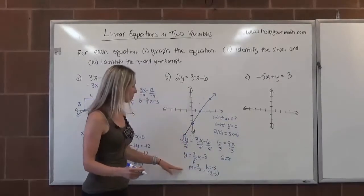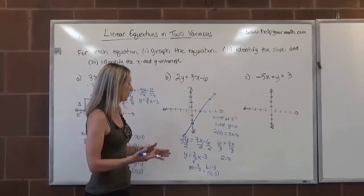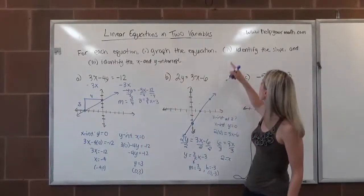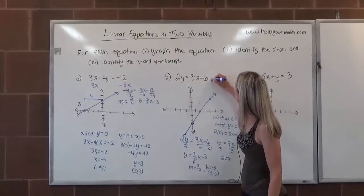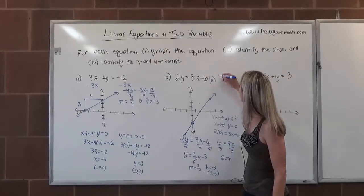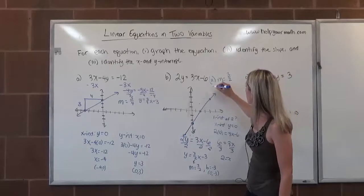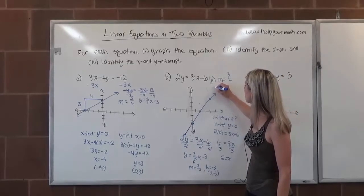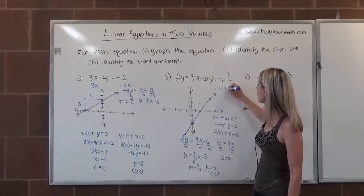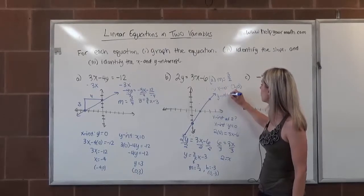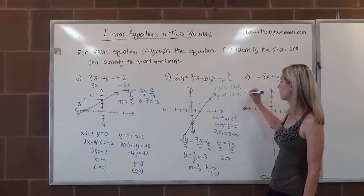So we have all three pieces of information. We might want to write them nice and neat so that way they're all in one place. Because right now I'm kind of all over the place. So it says identify the slope. So I'm going to say m is equal to 3 over 2. And then for 3 it's asking for the x and y-intercept. The x-intercept was at 2, 0. And the y-intercept was at 0, negative 3.